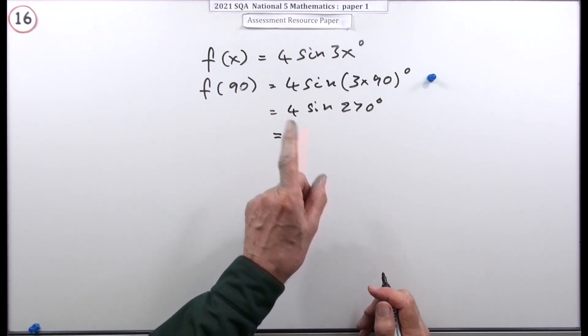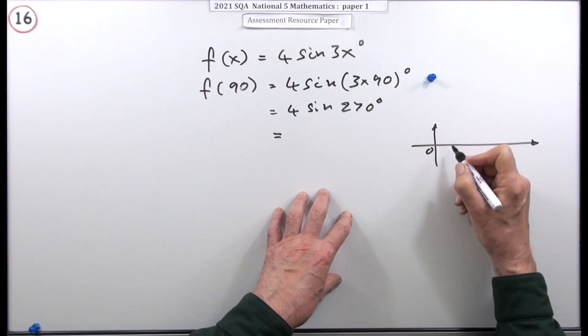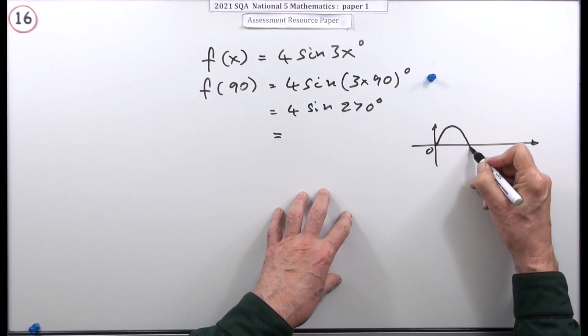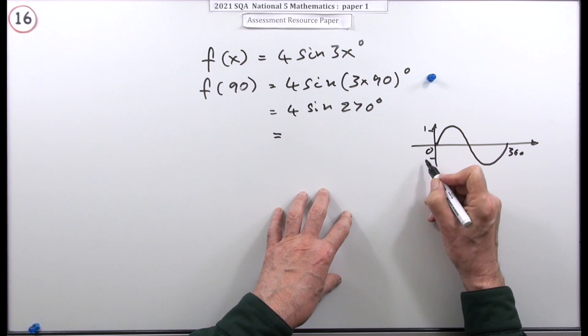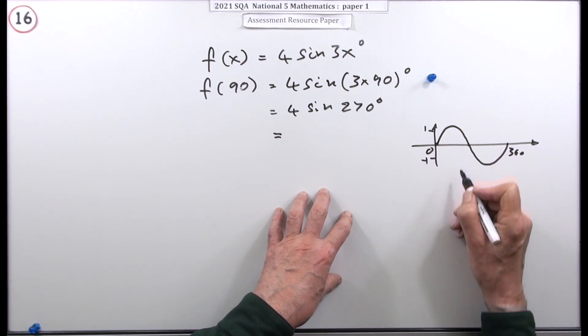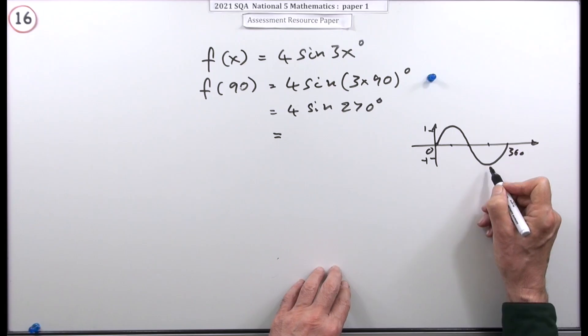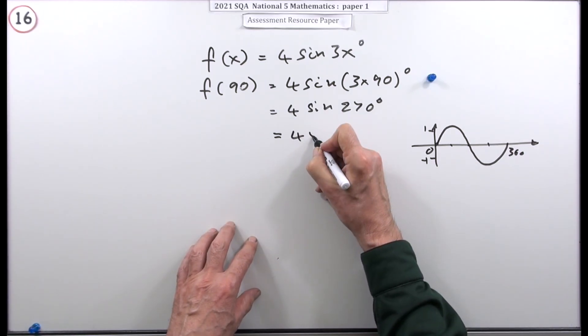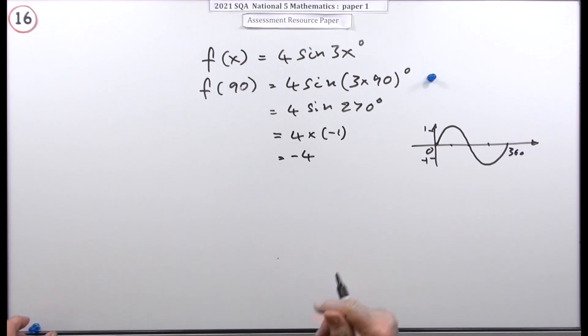The best way to do that is just think of its graph, the sine graph. It starts at 0, it goes up, down and finishes at 360. It goes up to 1, it goes down to negative 1. There's 180 in the middle. So that's 90 and there's the 270. So at 270 the value is negative 1. So you've got 4 times negative 1 which is negative 4.